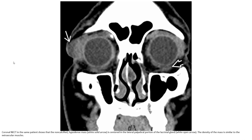This is another example — the coronal view of non-contrast CT in the same patient as the first example. It shows a non-calcified hypodense mass, indicated by the white arrow, centered in the lateral fossa, within the lateral orbital wall indicated by the open arrow. The density of the mass is similar to the extraocular muscle.